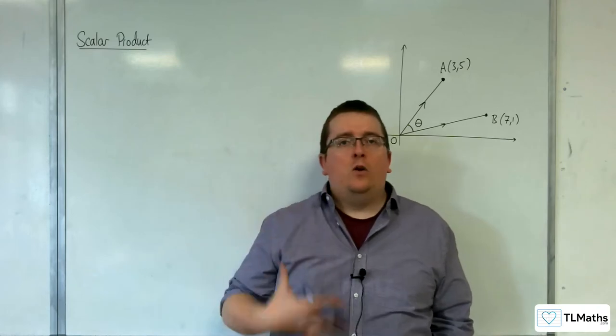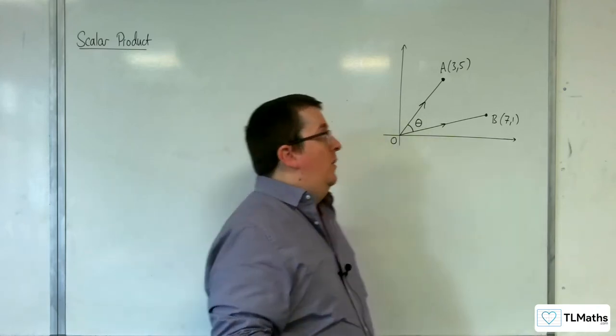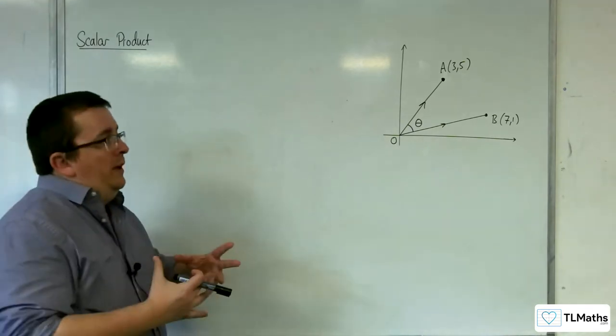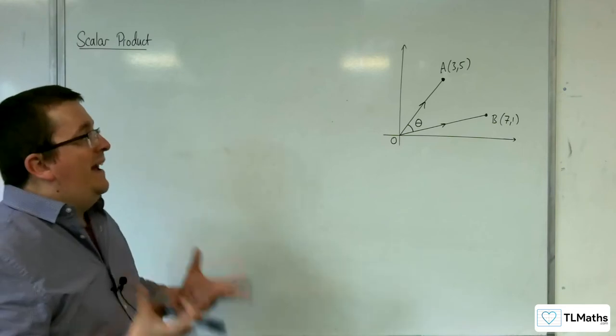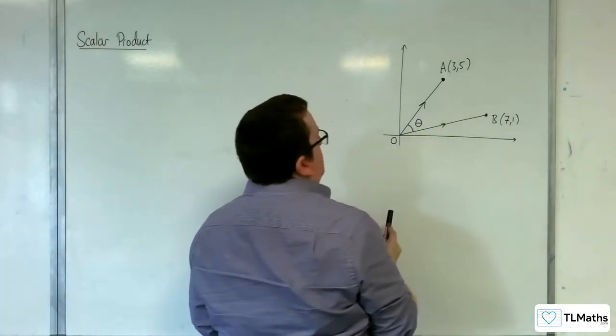In this section, we're going to be working our way towards learning about the scalar product. But to start off introducing this, let's look at a specific problem of finding the angle between these two vectors, OA and OB.